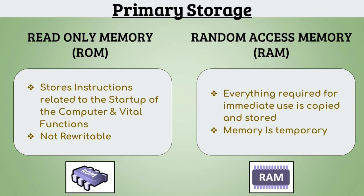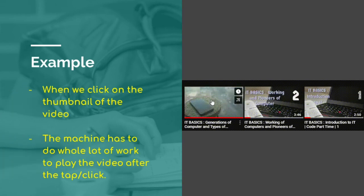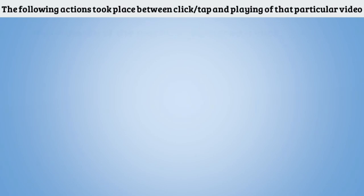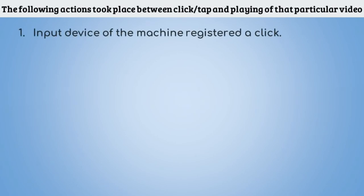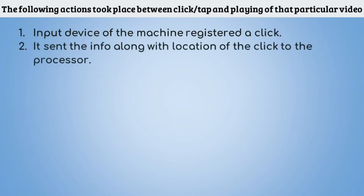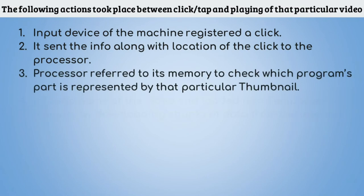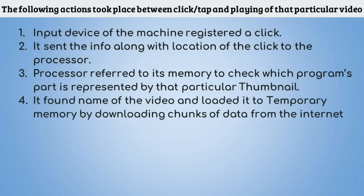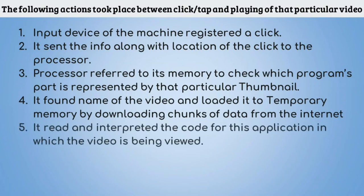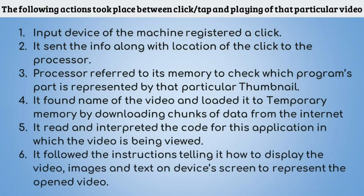Let's retrace our steps to a few minutes ago, when you turned your attention to your device and clicked on the thumbnail to open this video. What was just a click or a tap for you meant a whole lot more to your computer or mobile phone. Once you clicked on the thumbnail, your job was done. The input device of your machine registered a click and sent the information along with the location of the click to the processor. The processor referred to its memory to check which program's part is represented by the thumbnail in that section of the screen. It then found the name of the video and loaded it to the memory by downloading chunks of data from the internet. Post that, it read and interpreted the code for this application in which you are viewing this video. Then it followed the instructions telling it how to display the video, images and text on your screen to represent the opened video. All this happened within a few seconds in the wonderful device that is your computer or your mobile phone.